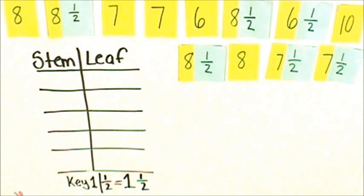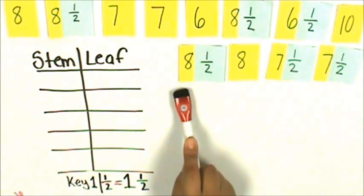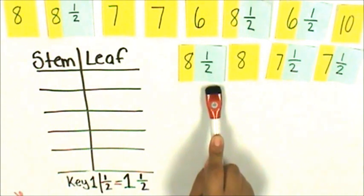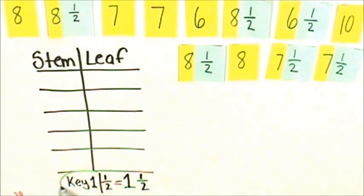The stem represents the place values preceding the last digits, or when we have fractions, the stem is the whole number and the fraction is the leaf. This is our key. This means 1 is the stem and the fraction, 1 half, is the leaf.